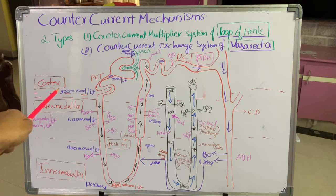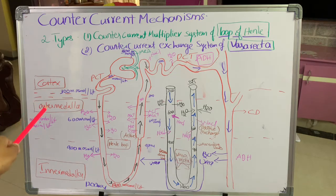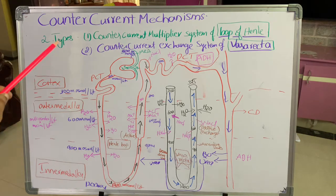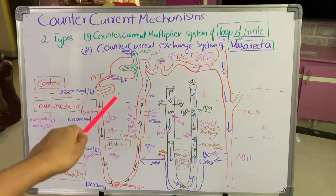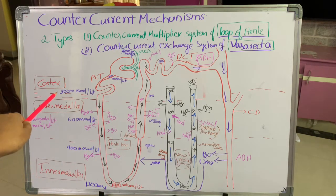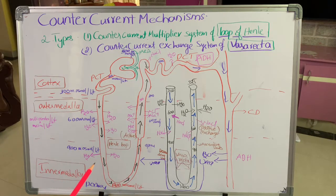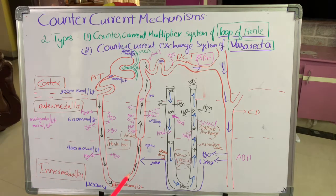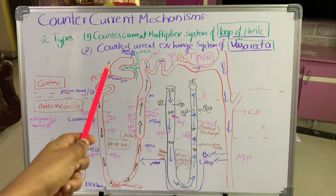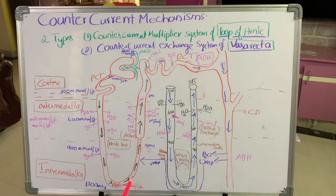How does this isotonic primary urine become hypertonic with 1200 milliosmoles per liter osmolarity? This is due to the structure of the loop of Henle. The loop of Henle has a unique structure — it contains two limbs: one descending limb and one ascending limb. The ascending limb has two segments: a thin segment and a thick segment.